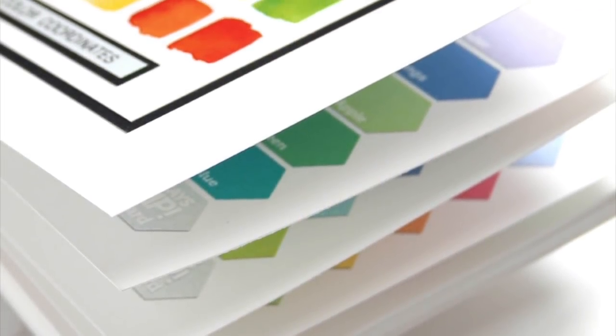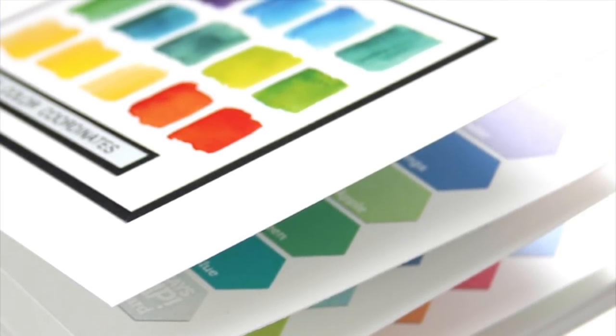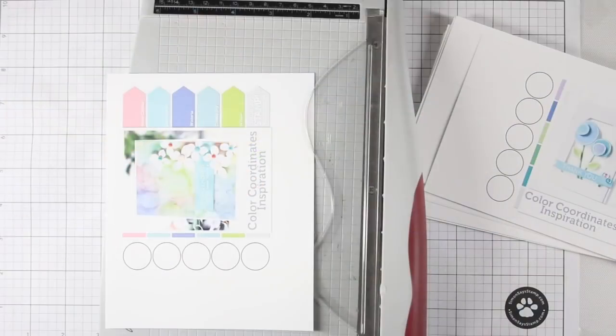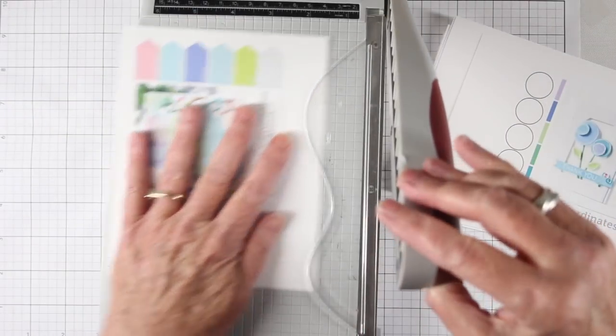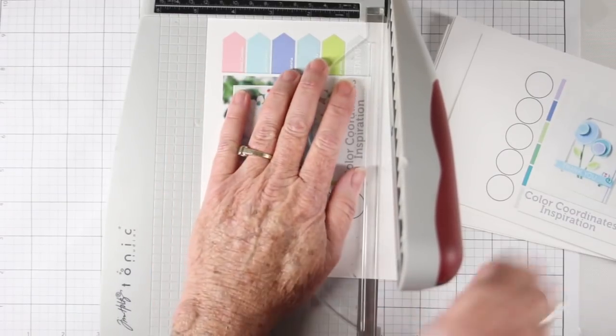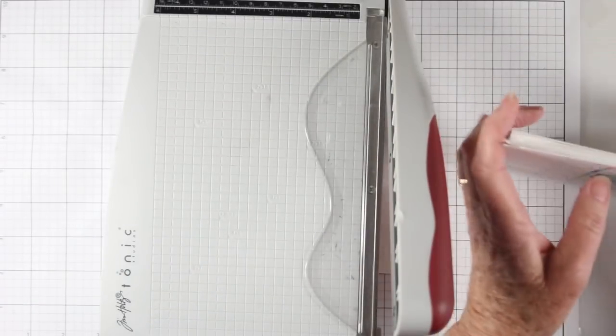I've gotten a lot of requests to have our color coordinates all in one place and so I've created a PDF that you can download and that is in the description box below. I am creating a swatch book with this and I am cutting my pieces from the sheets that I've printed. I've printed these onto Neenah White cardstock 80 pounds so that they have some durability.